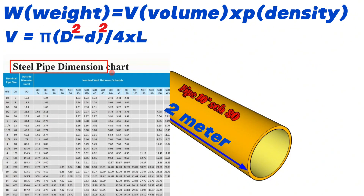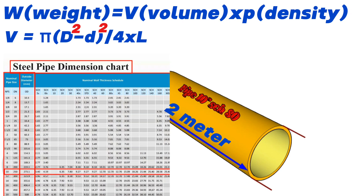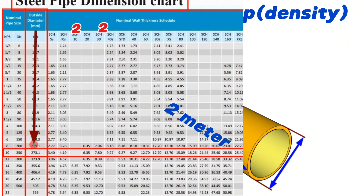This is the steel pipe dimension chart. The nominal pipe size is shown in the first column. The outside diameter of pipes is shown in the second column. The nominal wall thickness schedule is shown in the last column. Looking at the row for nominal pipe size 10 inch, the outside diameter is approximately 273 millimeters and the wall thickness for schedule 80 is 15.09 millimeters.